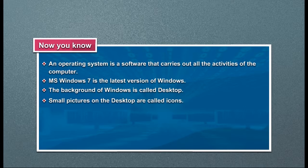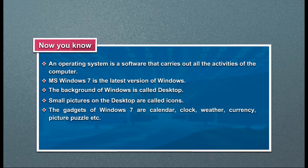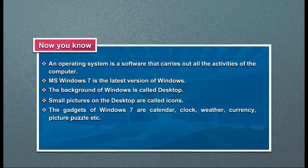Small pictures on the Desktop are called Icons. The gadgets of Windows 7 are Calendar, Clock, Weather, Currency, Picture Puzzle, etc.